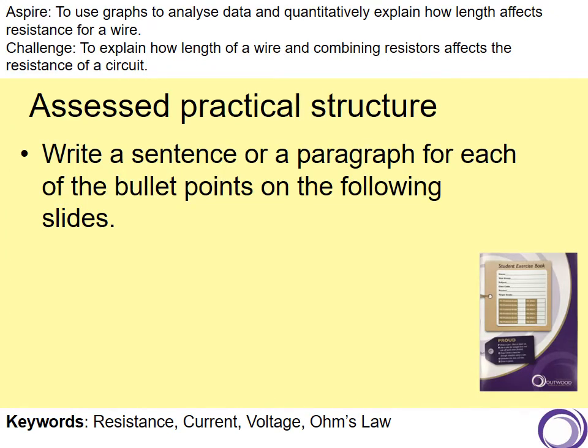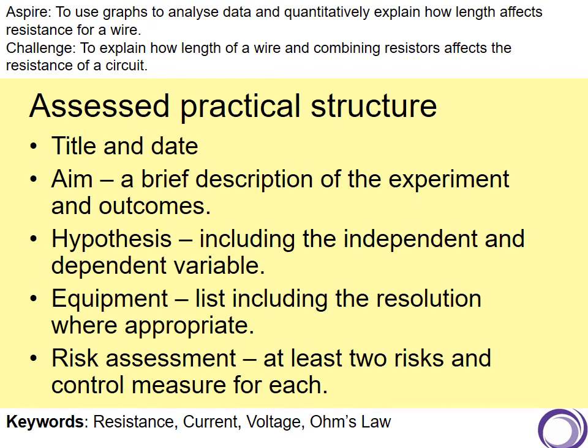So, what I'd like you to do now is, using the assessed practical structure, write a sentence or a paragraph for each of the bullet points on the following slide. You may need to pause this clip at each slide as we go along, but I'll quickly read through them. So, within your assessed practical structure, you need to add the following: a title and date, an aim, which is a brief description of the experiment, hypothesis, which includes independent and dependent variable. Remember, an independent variable is the thing that you've changed, and in this experiment, it was length of the wire, and the dependent variable is what you measured. The equipment, and any risks that you think are involved within this experiment.